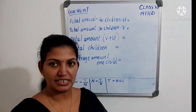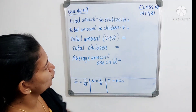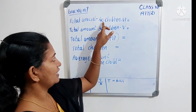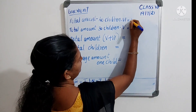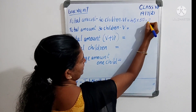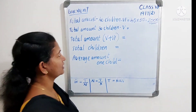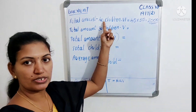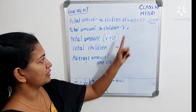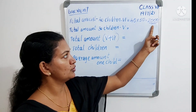You will write the steps and find it. First, find the total amount of the 40 children of class 6. They donated 50 rupees each, so total is average multiplied by number — 40 multiplied by 50 is equal to 2000 rupees.